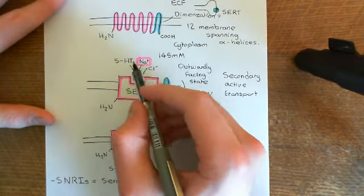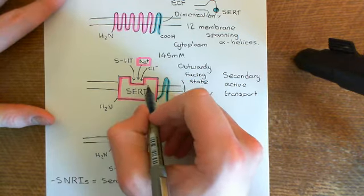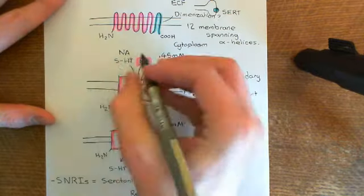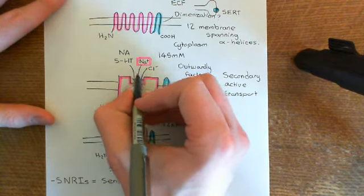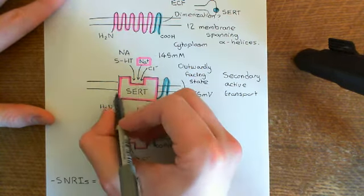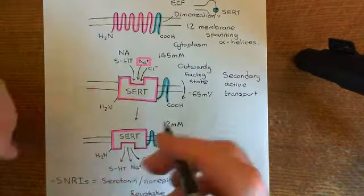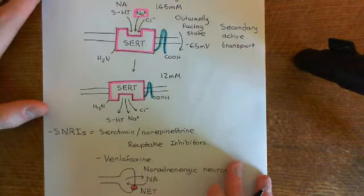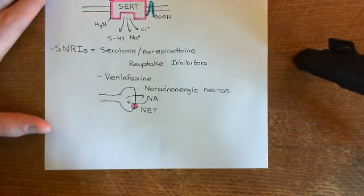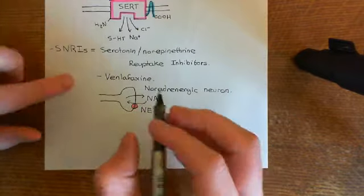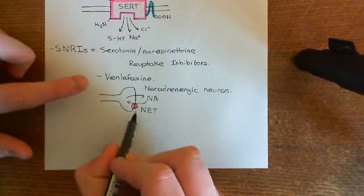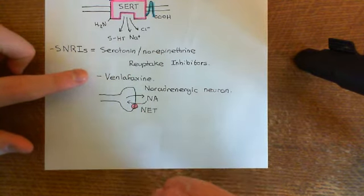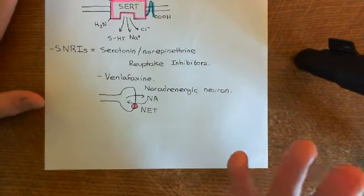Similarly, the norepinephrine transporter requires the same things to bind to it as the serotonin reuptake transporter - all that's changed is that the substrate, instead of being 5-HT, will be noradrenaline. Noradrenaline will bind, a sodium ion will bind, a chloride anion will bind, then the norepinephrine transporter will undergo a conformational change from the outwardly facing state to the inwardly facing state, where it will release the noradrenaline as well as the sodium and chloride ions. That's how you reuptake noradrenaline from the extracellular fluid. SNRIs will bind to and stop the action of the norepinephrine transporter as well as the serotonin reuptake transporter, increasing the levels of both serotonin and noradrenaline within the brain.